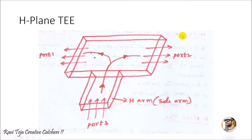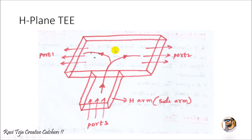This is a diagram of an H-plane T, which consists of two waveguide junctions welded together. This is one piece of waveguide and this is another piece of waveguide. So this straight waveguide has been welded with a small piece of another waveguide which is horizontally fixed to it. The rectangular waveguide in a straight line has two ports — port 1 and port 2 — interlinked with another cross-section of a waveguide considered as port 3.